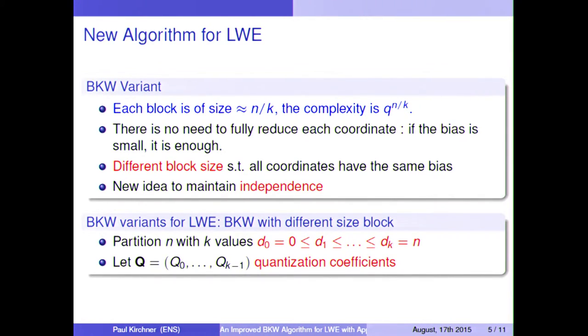So here what we remark is that having different block sizes is better, and we search block size such that all coordinates have the same bias. And we also add a new idea to maintain independence in the error so that we can improve faster algorithm. So we will partition our n coordinates with k values, which are the i's at the beginning of each block, and we also have quantization coefficients for each block.